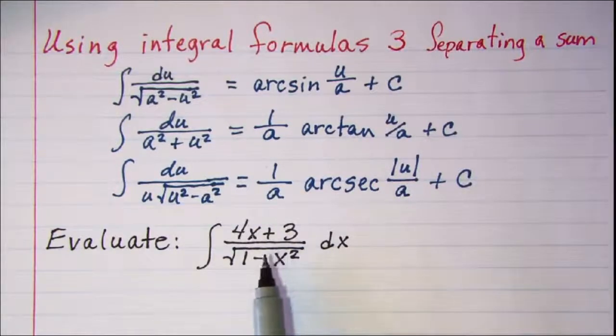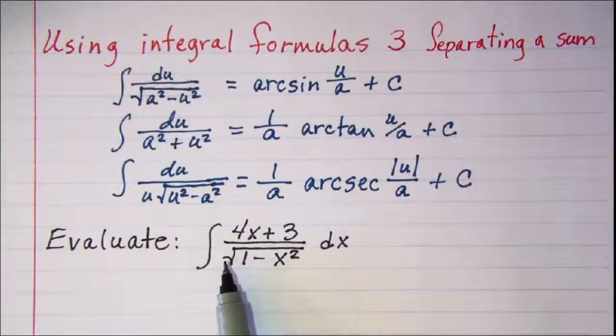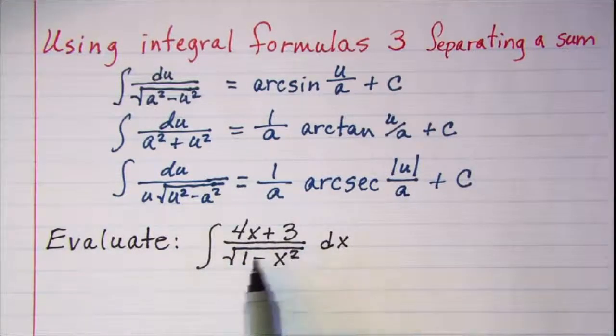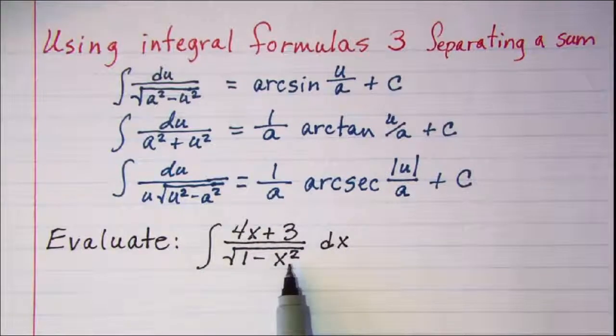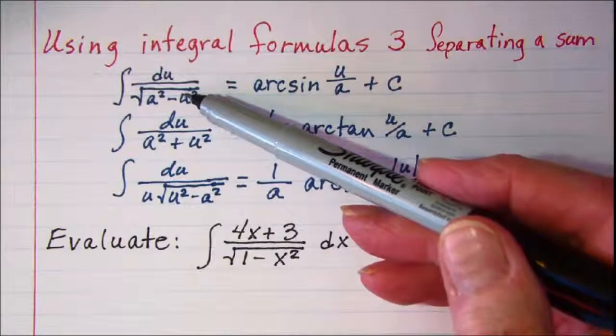Now our first thing to do is decide which formula we want to use, and it looks like we have a radical 1 minus x squared in the denominator, so the first formula is the formula that we'll be needing.